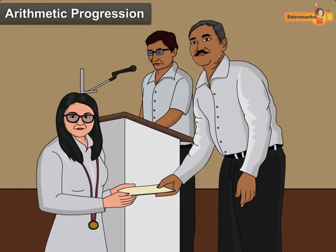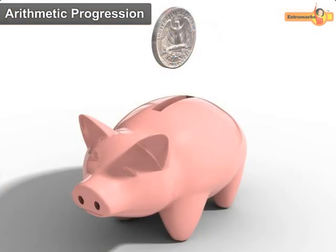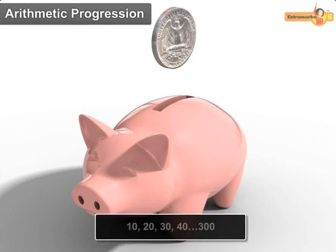The cash prizes given by a school to the toppers of grade 1 to 10 are respectively $200, $300, $400, $500 and so on. Jerry starts saving money for 30 days in his piggy bank. His everyday saving of $10 is $10, $20, $30, $40 and so on.